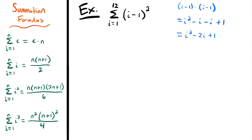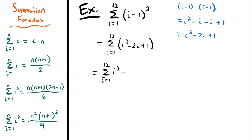Now that we've expanded, we can replace the original quantity in our summation and rewrite it as the summation from i equals 1 to 12 of i squared minus 2i plus 1. The next step is to split this into three different sums — one for each term: the sum of i squared, minus the sum of 2i, plus the sum of 1. We can pull the constant 2 out of the middle sum, leaving 2 times the sum of i.